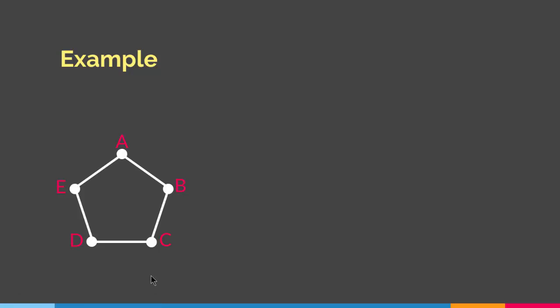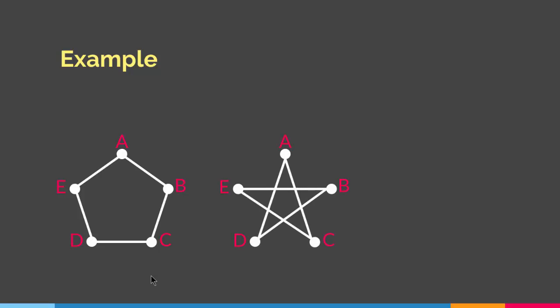However, is there another way we can connect these vertices such that two vertices that are adjacent in this graph are not adjacent in the graph we want to create? Yes, and keep in mind that the new graph has to have the same number of vertices — so it has to have five vertices. We can connect A to C and A to D, since here A is not connected to C and is not connected to D. Therefore the adjacency of A-C and A-D is different than in this particular graph.